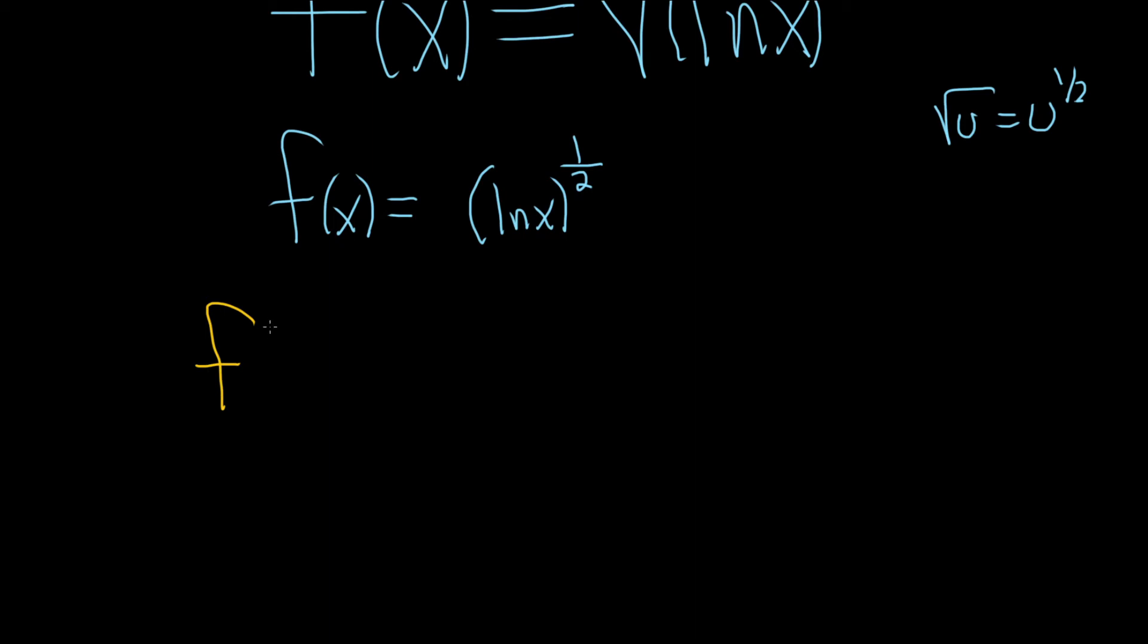So f prime of x is equal to, so we'll bring the 1 half down, so we get 1 half. And we'll leave the inside untouched, so ln x. And then 1 half minus 1 is negative 1 half, right? You subtract 1. So you bring the number down, subtract 1. And then now we're going to multiply by the derivative of our inside function. So our inside function is ln x, so its derivative is 1 over x.